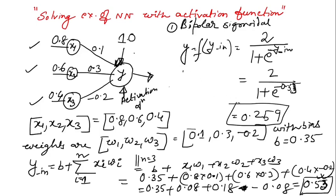So bipolar sigmoidal function looks like this. Minus 1, Fx. It is coming like this. It is minus 1 to plus 1. Its range is minus 1 to plus 1. This is bipolar sigmoidal function.